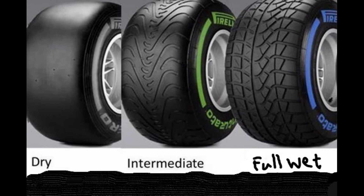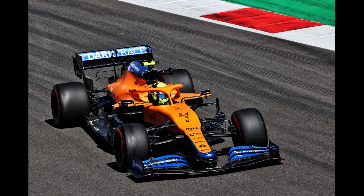Formula One tires provide grip in the same basic way that all tires do — they utilize large contact patches that keep the car connected to the road. However, there are some differences that allow F1 tires to perform better than average road tires, aside from the fact that their lack of tread means the contact patches are far bigger.